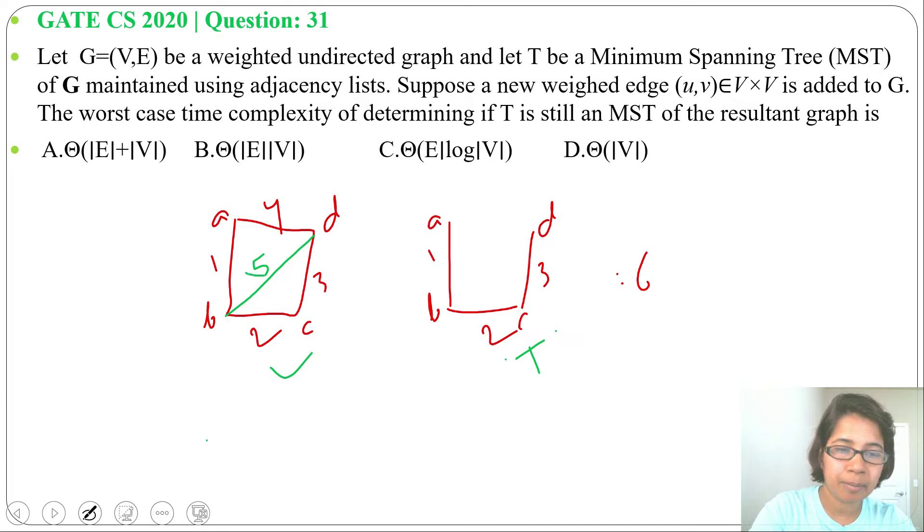So what we'll do is simply compare this 5 with 1, it's greater than, then 5 with 2, 5 is greater, then 5 with 3, 5 is greater. So we'll not include this edge.